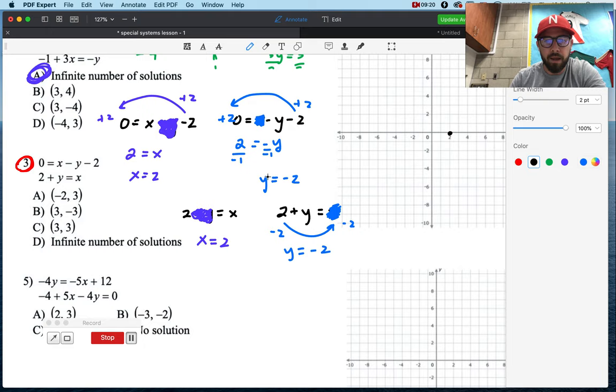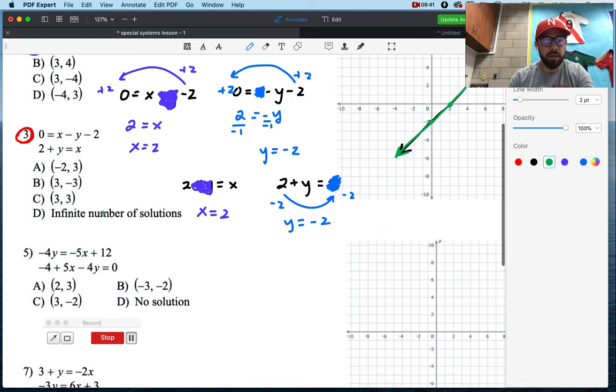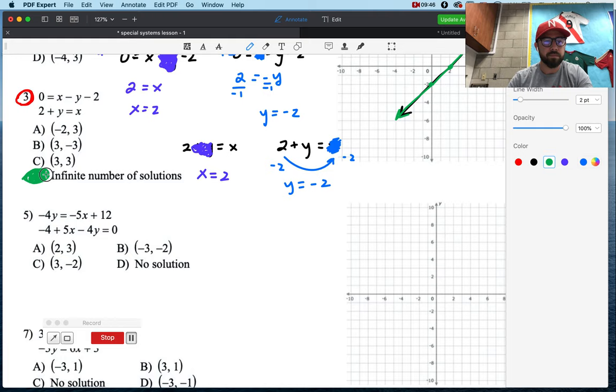This first guy, I have x equals 2, and I have y equals negative 2. For this second guy, I'll do him in green. I've got x equals 2, and I've got y equals negative 2. Well, it looks to me like it's the exact same line, which we just did, and we know that that means infinite number of solutions.